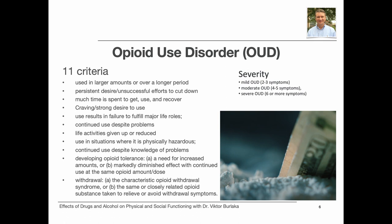DSM-5 includes 11 criteria for opioid use disorder, such as using in larger amounts or over a longer period, having a desire to reduce the use but not being really able to cut down, spending much time getting, using, and recovering from the use, and failing to fulfill major life roles. If two or more of these symptoms are present in a 12-month period, the diagnosis of opioid use disorder is made. The severity depends on how many symptoms were present: mild when two to three symptoms are present, moderate when four to five symptoms are present, and severe when six or more symptoms are present.